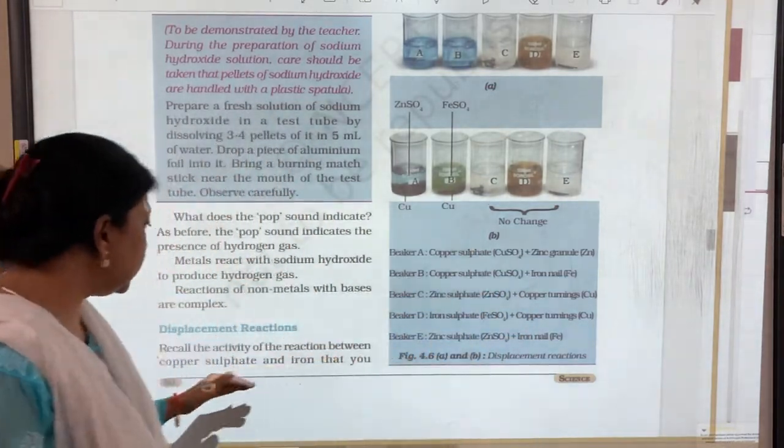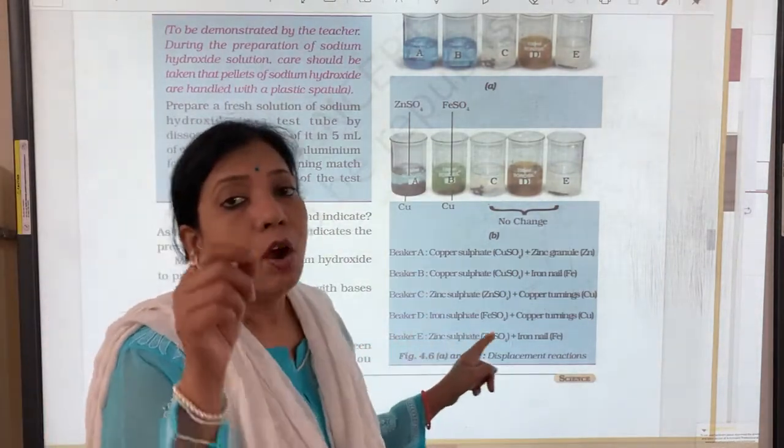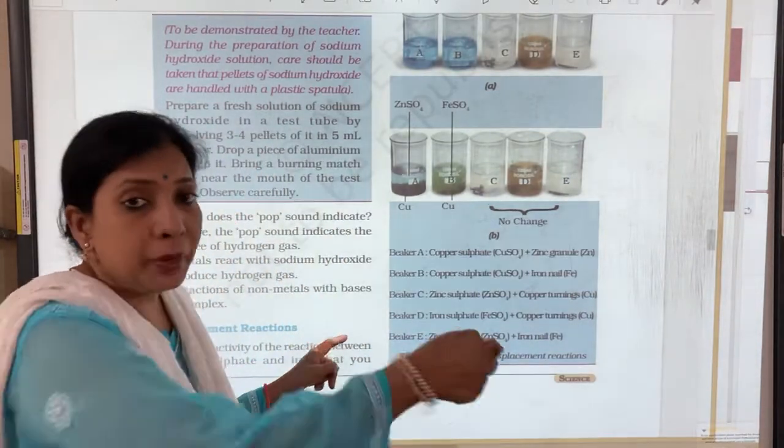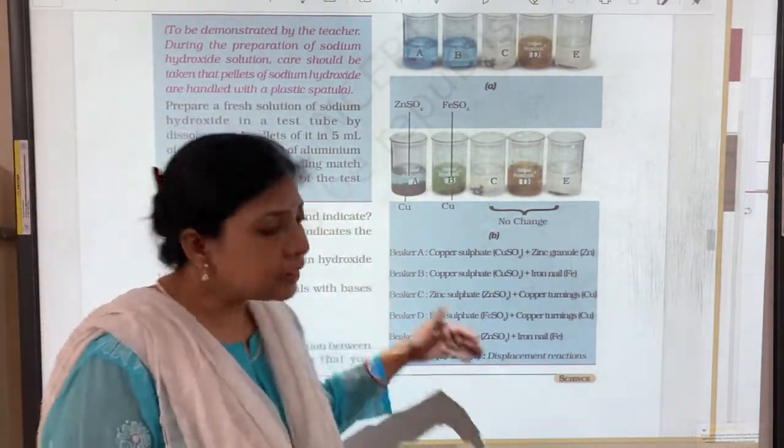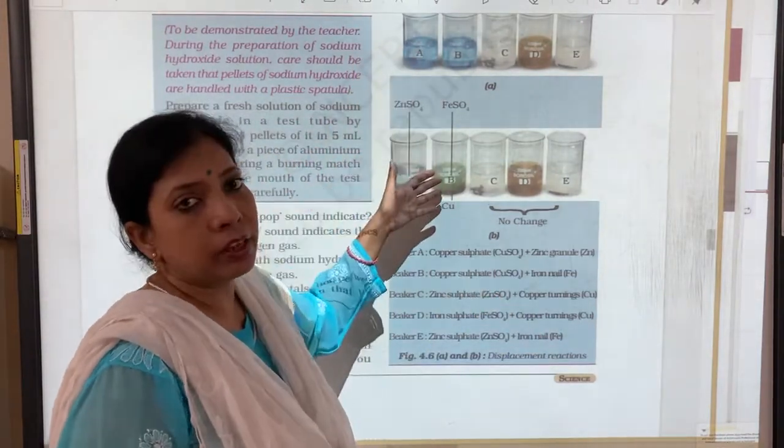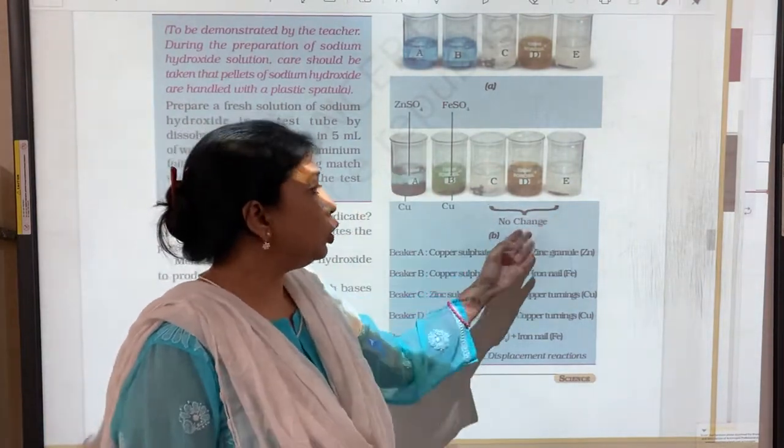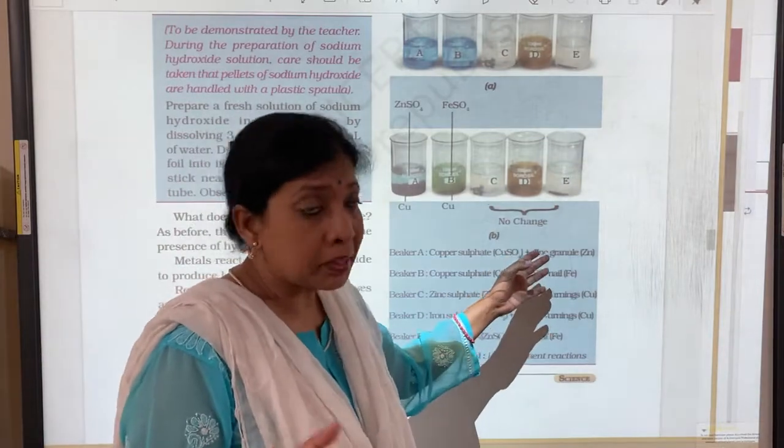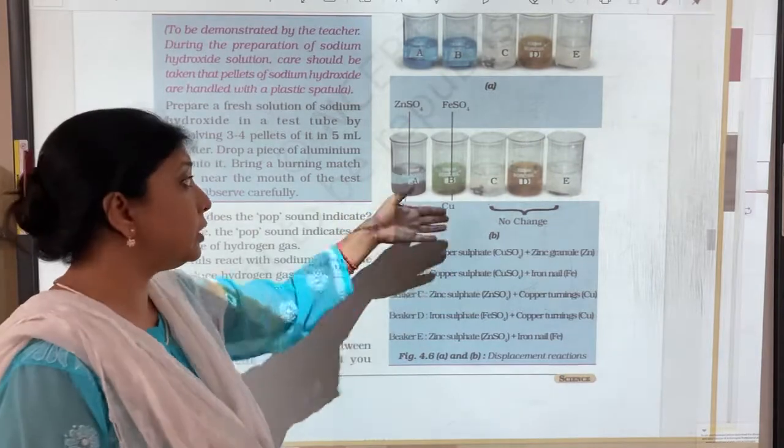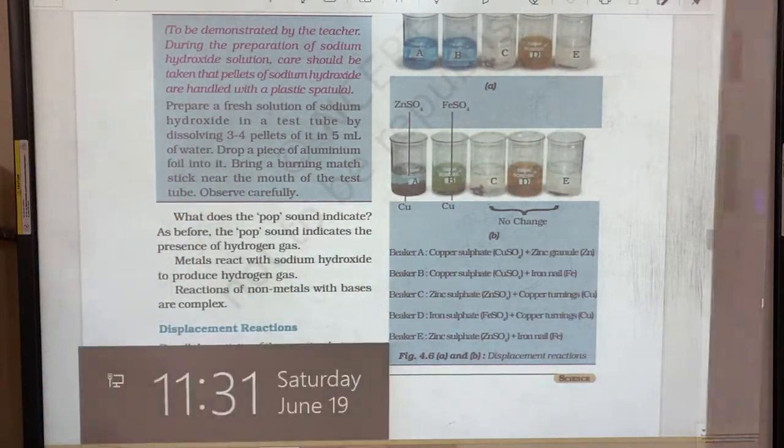And hence which is the strongest out of these? The strongest is zinc. Next is iron. And lastly the weakest here or the least reactive is the copper. So this is the displacement reaction where a more reactive metal displaces the less reactive metal and new substances are formed, a chemical reaction.